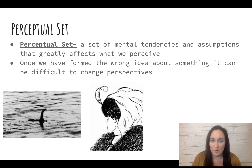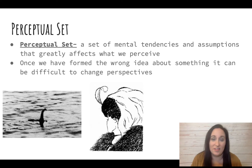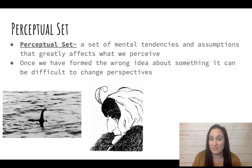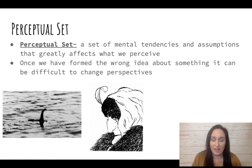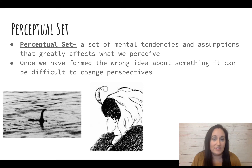For example, the Loch Ness monster — a British newspaper posted an image and people said there was a monster in the lake. That idea of what a monster looks like led people to look at this picture in the bottom left and see a monster with a long neck, when actually it was a tree branch. It took someone looking from a different perspective to realize that — noticing the water wasn't moving around it and that it was just floating.